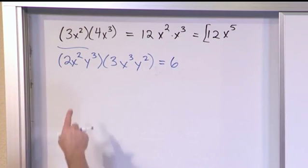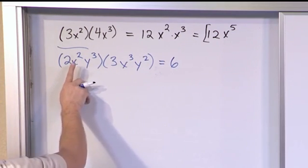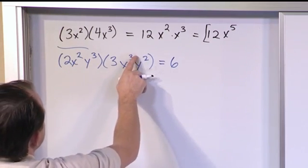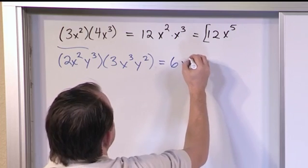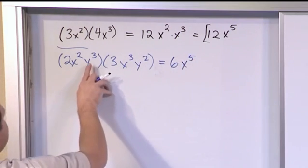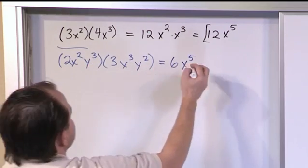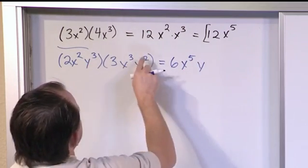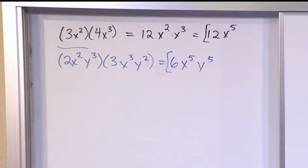And then basically you start multiplying both of these guys times both of these guys. But you'll eventually notice that you'll have x squared times x cubed. They have the same base so you can just add the exponents. x to the fifth, just like before. And then you're also multiplying y cubed times y squared. I have the same base so I just add the exponents. 3 plus 2 over here is 5.